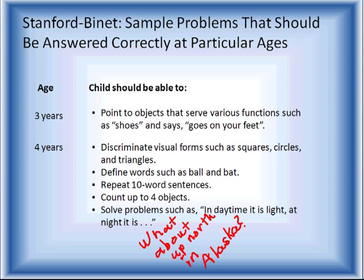The Stanford-Binet has sample problems that should be answered correctly at particular ages. At three years old, a child would probably know that shoes go on their feet. At four, there are categories about certain words and repeating a ten-word sentence. One area — noted in red — says solve problems such as 'in daytime it is light, at night it is.' But if a child lives in Alaska, daytime in winter is pretty much dark, so a child might miss the question, making it seem they aren't bright. We'll be talking more about validity as we go through.